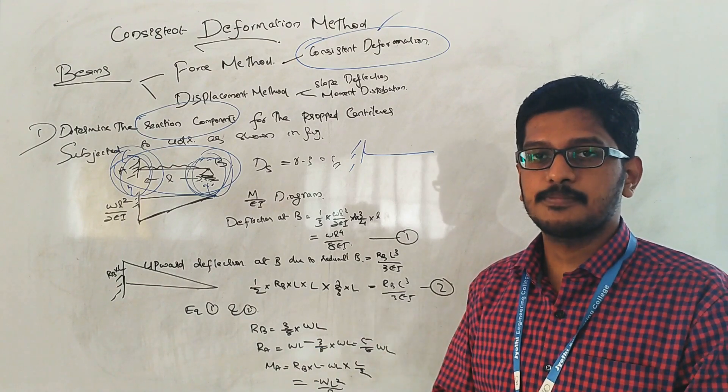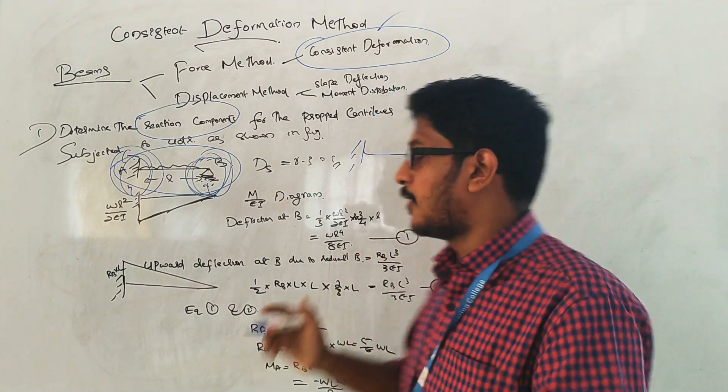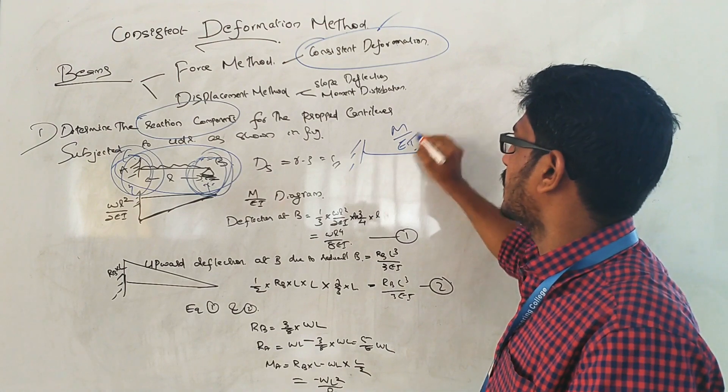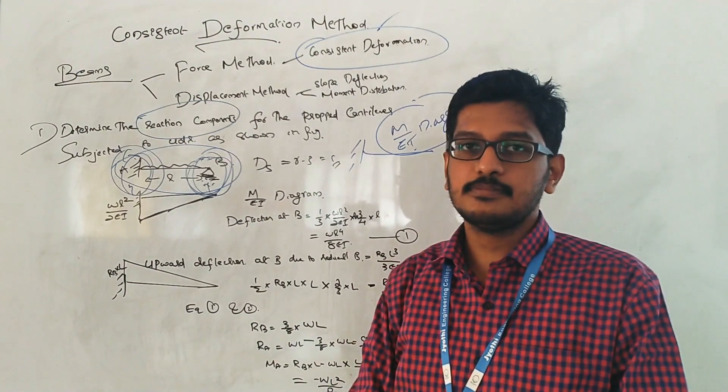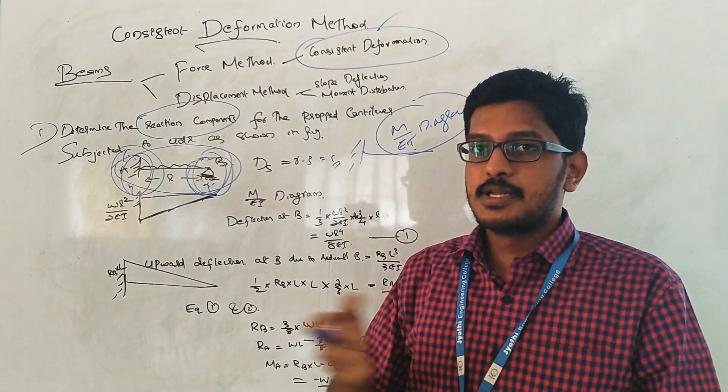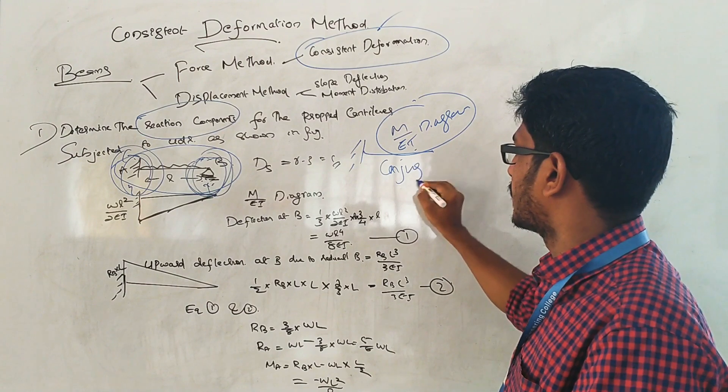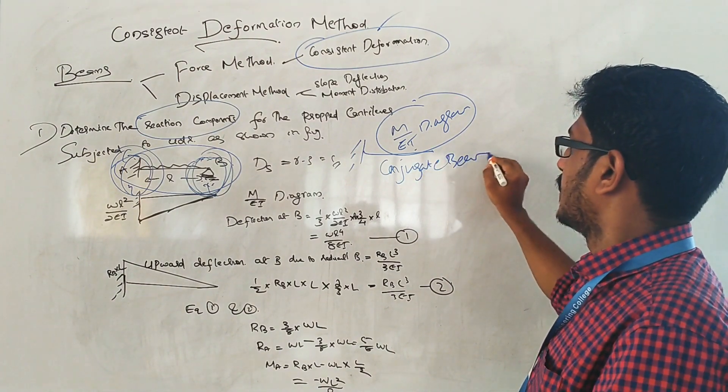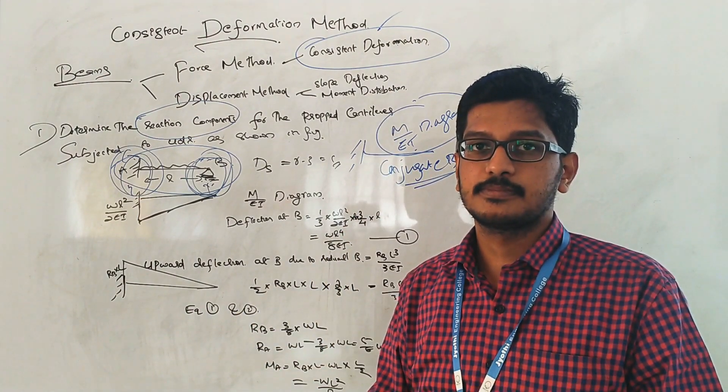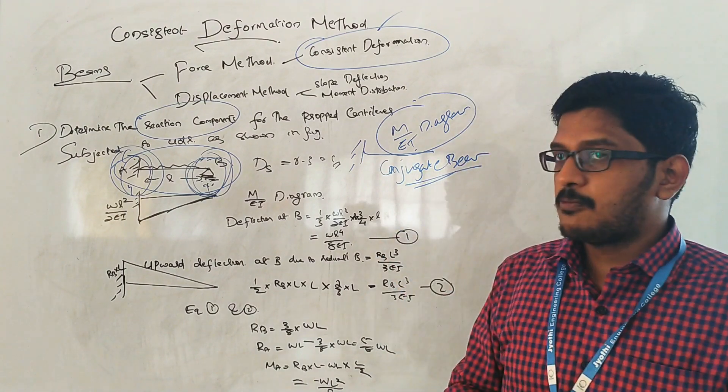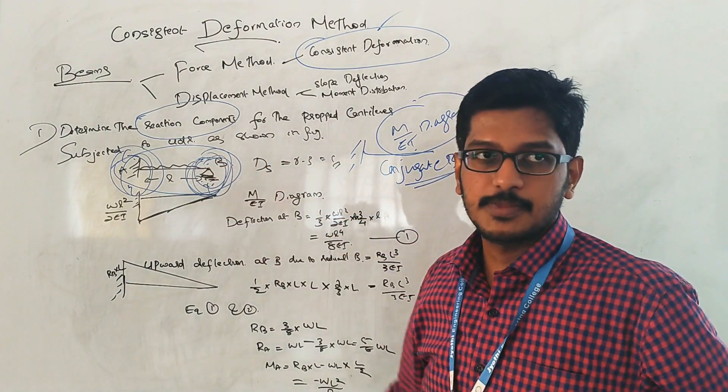What is the next procedure? Here we are going to use the moment area method, M by EI. In some textbooks there is another method called conjugate beam method. Don't be confused with these terms - you can either use M by EI or conjugate beam method.